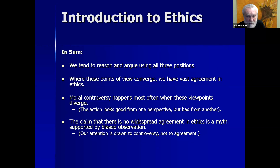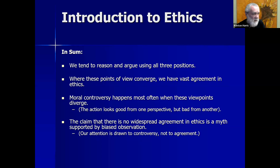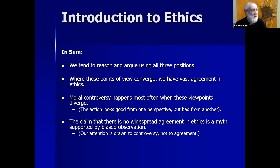In sum, we tend to reason using all three positions. When making our way through the world, we consider consequences, rights, duties, obligations, and character. We consider virtue, consequentialist, and deontological aspects of behavior. Where these views converge, we have vast agreement. If a behavior is admirable, has good consequences, and respects rights, we praise it broadly — take Mother Teresa of Calcutta: her work had good consequences for the people she served, and she was careful to respect their autonomy, rights, and dignity. So we gave her a Nobel Peace Prize.